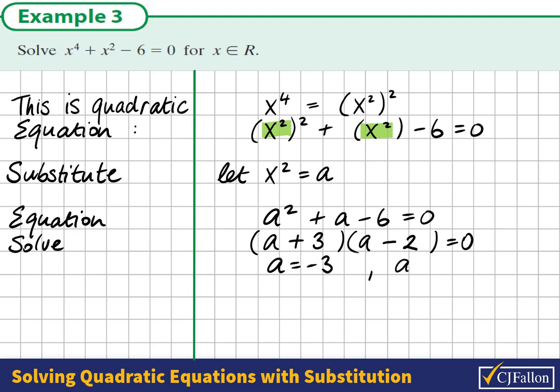Therefore, our solutions are a = -3 or a = 2. However, we want to know what x equals. Remember, a = x^2. So x^2 = -3, meaning x = ±√(-3).